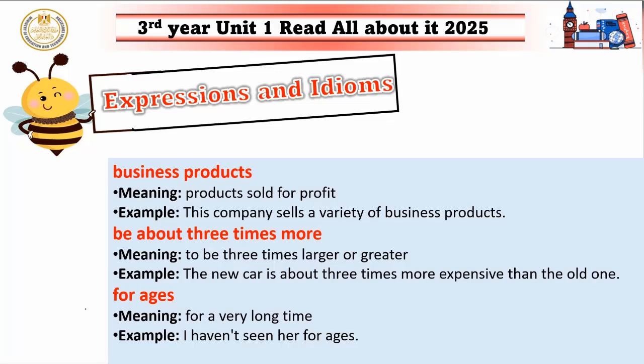'For ages' means for a very, very long time. For example: I haven't seen her for ages. This means I haven't seen her for a very long time — it feels like ages since I last saw her.